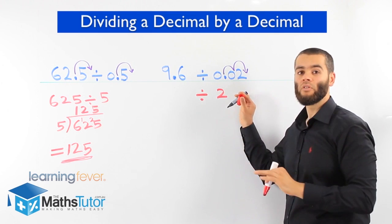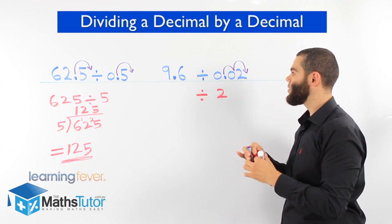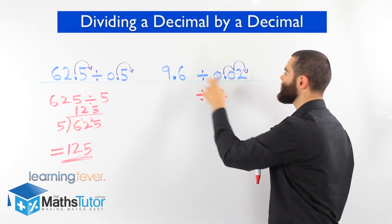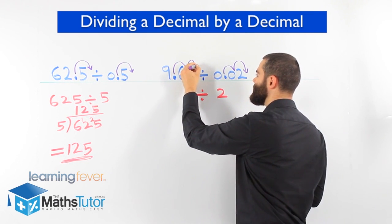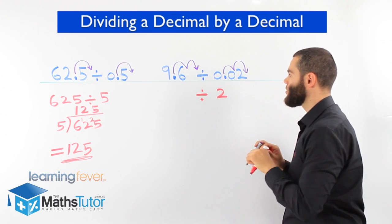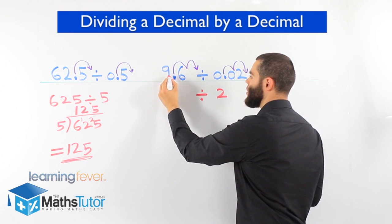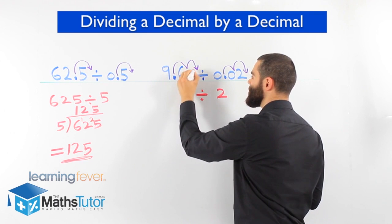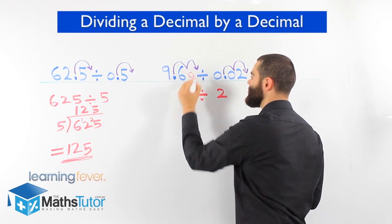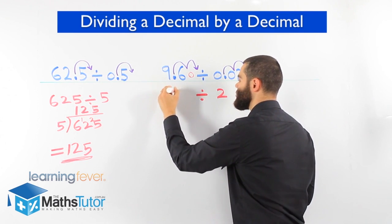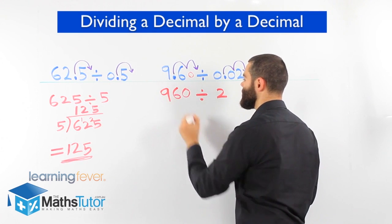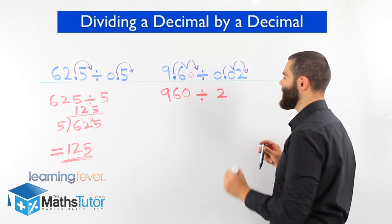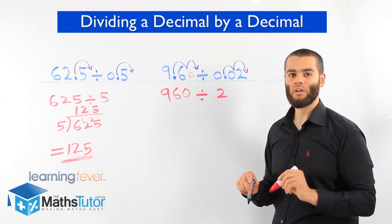Whatever we do to this side, we've got to do to the other side. So we jump twice. We've got to grab the point and jump it twice. So it will become 9, 6. And of course, when we're jumping over nothing, we have to put a 0. So 960 divided by 2. So now we can actually work out division.